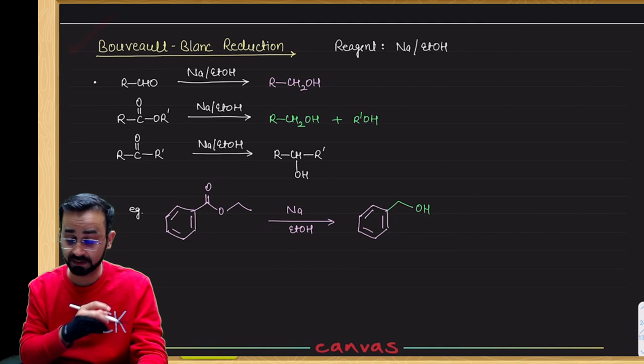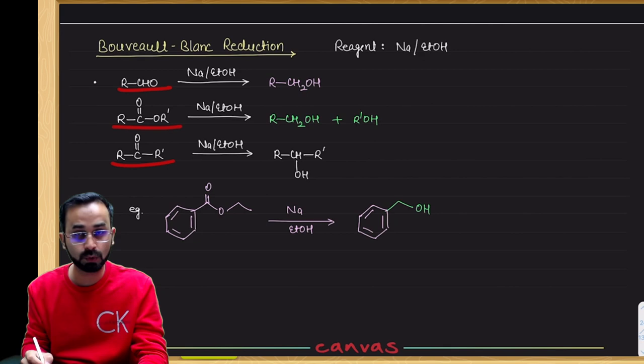Now next, the Bouveault-Blanc reduction. Look at this. Sodium in the presence of ethanol will reduce the aldehyde, ester, and ketone. The aldehyde will simply convert to a primary alcohol.